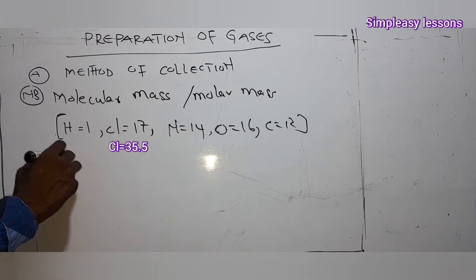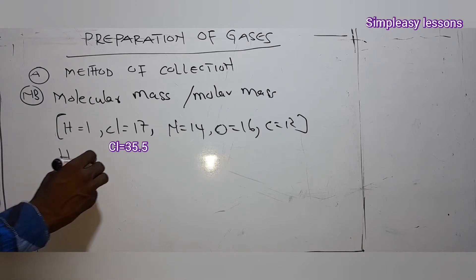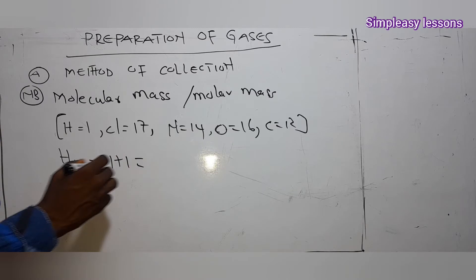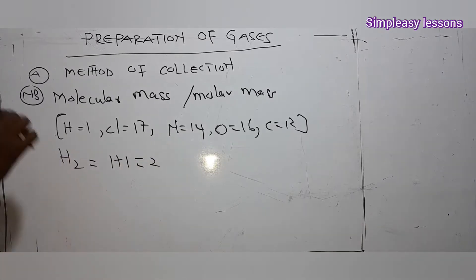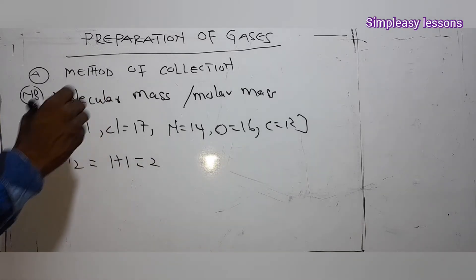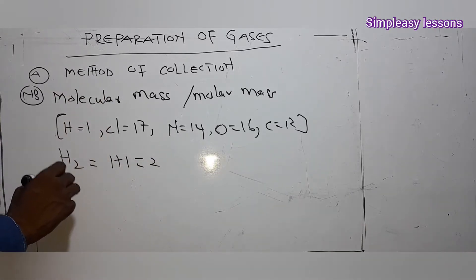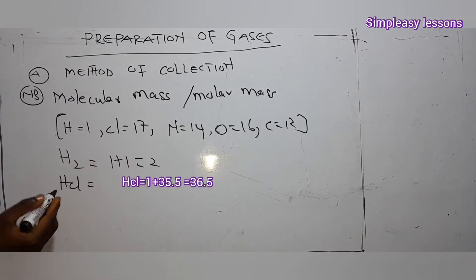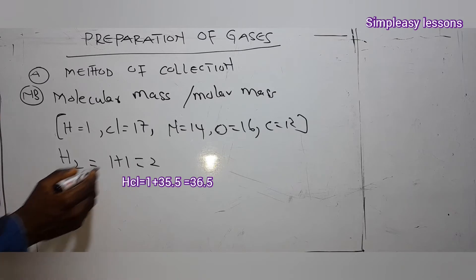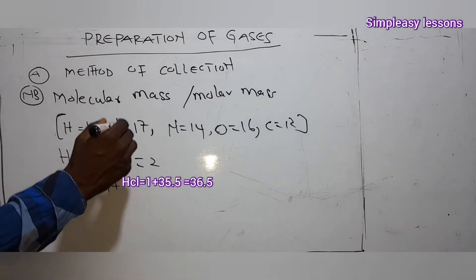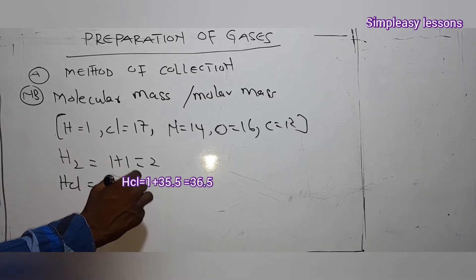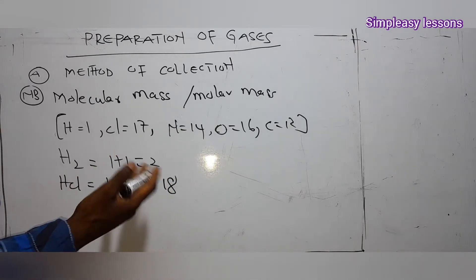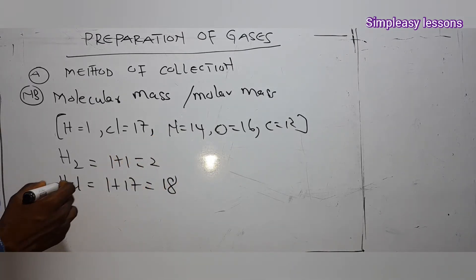If you have a compound like H₂, the molar mass will be 1 + 1 = 2, because we have two hydrogen atoms. Then if you have something like HCl, the molar mass is: H = 1 plus Cl = 17, giving you 18 as the molar mass. We can add the unit grams per mole.